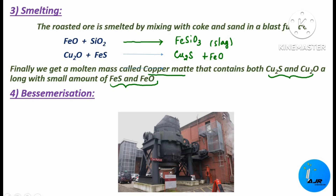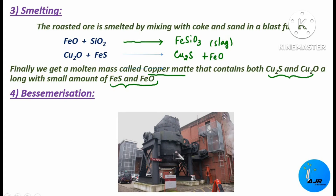The next step is bessemerization. For this, we make use of a Bessemer converter. The matte obtained from the blast furnace is transferred to this Bessemer converter. It is a pear-shaped furnace made of steel, lined inside with lime or magnesium oxide. This converter can be tilted to any position for charging or discharging.